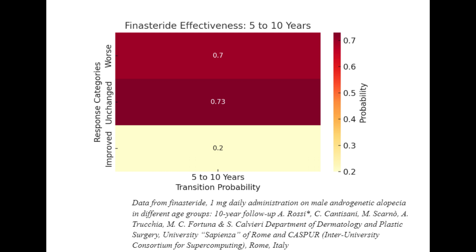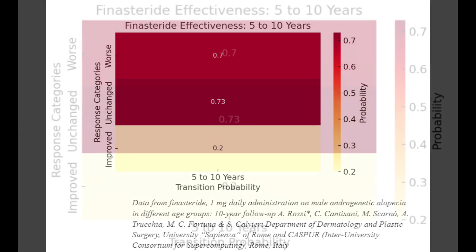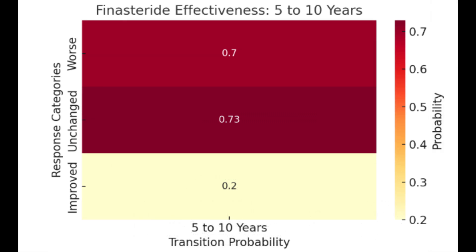It shows that if a patient's condition improves by the fifth year, there's a 73% chance that this improvement will peak in its effectiveness or persist by the 10th year.